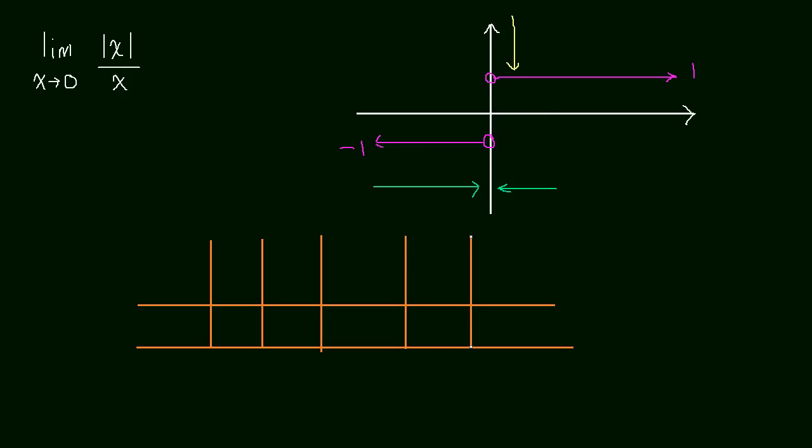All right, so we're trying to figure out what happens as x squeezes in on 0. So from the left side, let's pick negative 0.01, negative 0.001, negative 0.0001. And then from the right side, let's pick positive 0.01, positive 0.001.